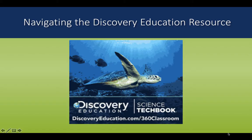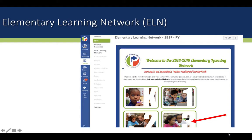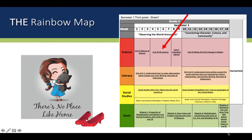Navigating the Discovery Education resource is as easy as starting in the elementary learning network. When you're in the learning network, you can choose your grade level. For the purpose of this video, we'll be looking at a third grade unit. Once in the learning network, you'll see your rainbow map, and science is in the red bar. We'll be looking at third grade unit B, life science.